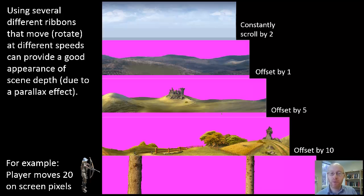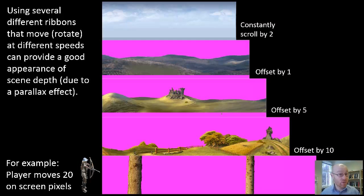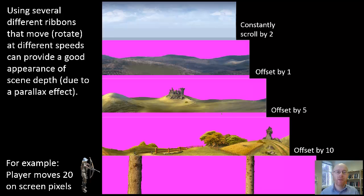If the player moves by 20 pixels on screen, the bottommost layer — at the same location as the player — also moves by 20 pixels. The layer behind that moves by only 10 pixels to appear further away. The layer behind that moves by 5 pixels, appearing even further. The clouds at the back are constantly scrolling by a certain amount and may move independently even if the player is standing still. Combined, these give a parallax effect where the background shifts at different rates to convey depth.